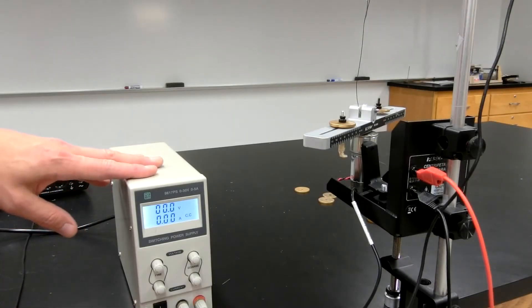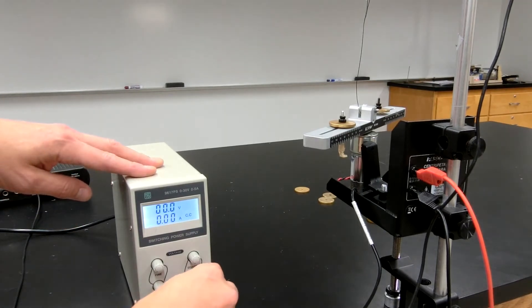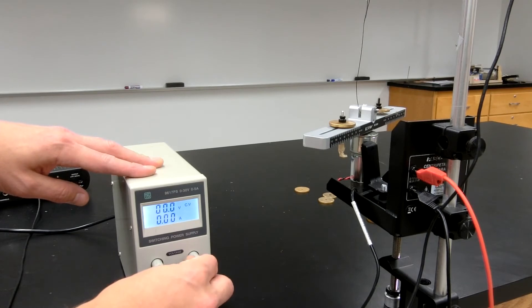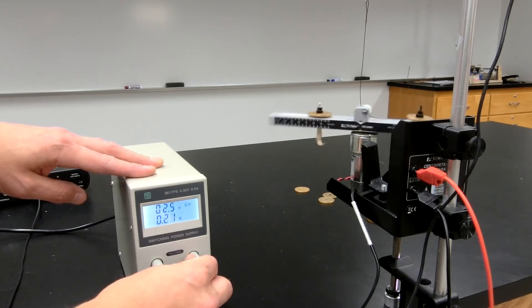To begin spinning the apparatus, turn on the power supply and apply a small amount of current. Then begin increasing the voltage to increase the rotation rate of the motor.